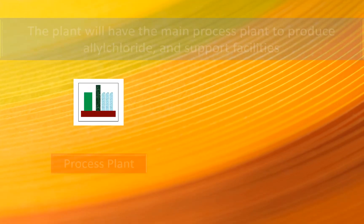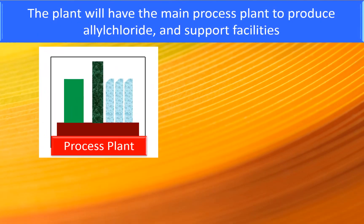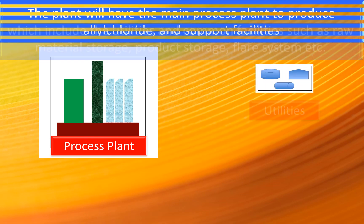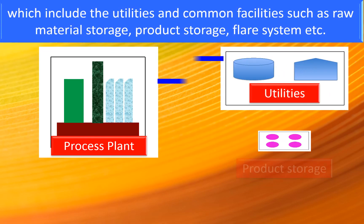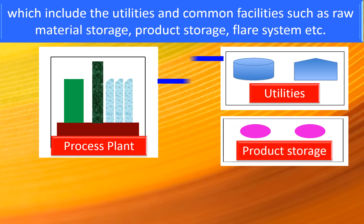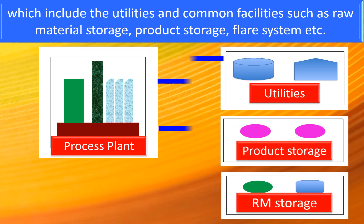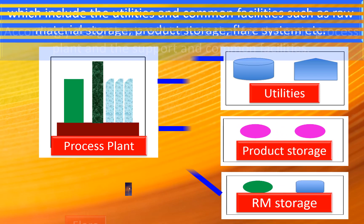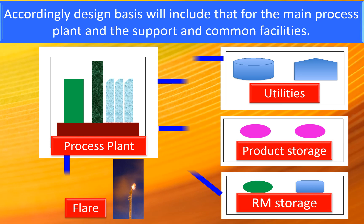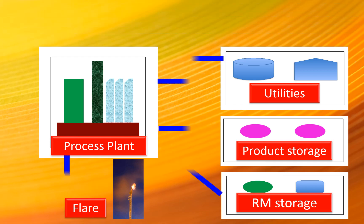The plant will have the main process plant to produce allyl chloride and support facilities, which include the utilities and common facilities such as raw material storage, product storage, flare system, etc. Accordingly, the design basis will include those for the main process plant and the support facilities.